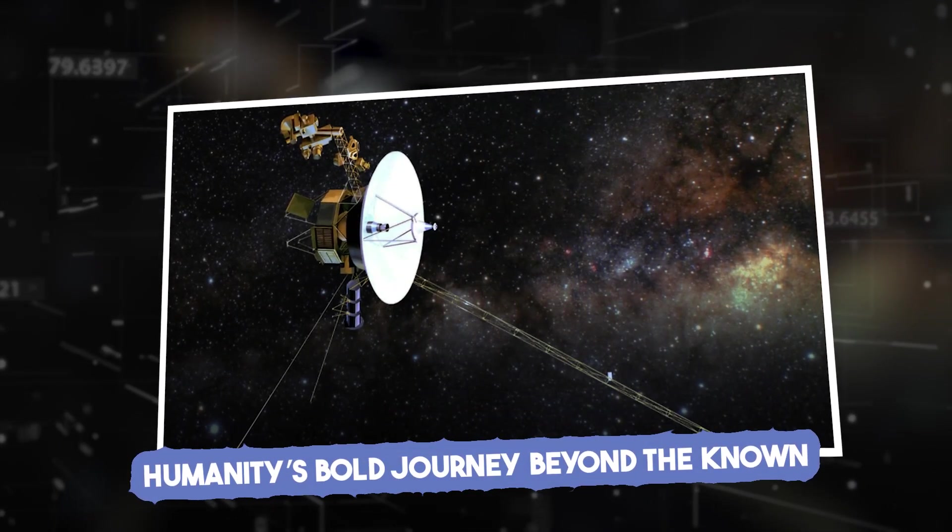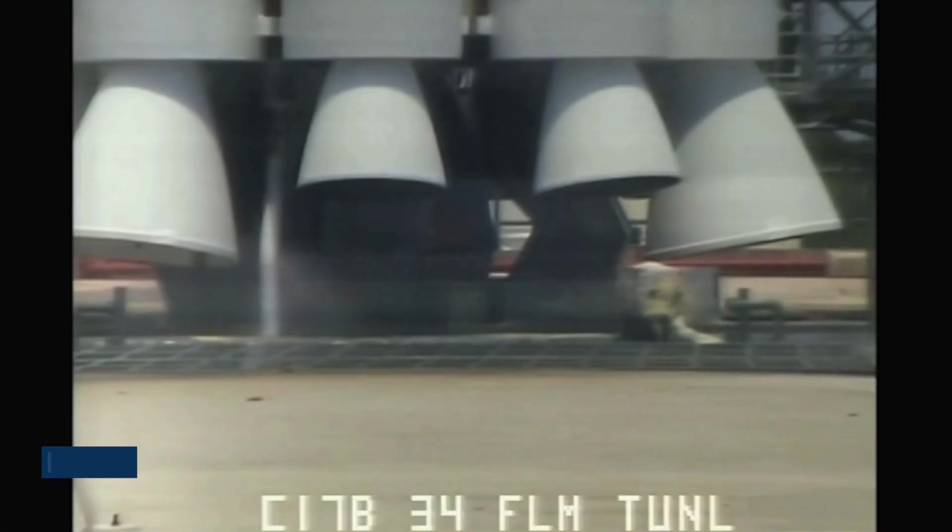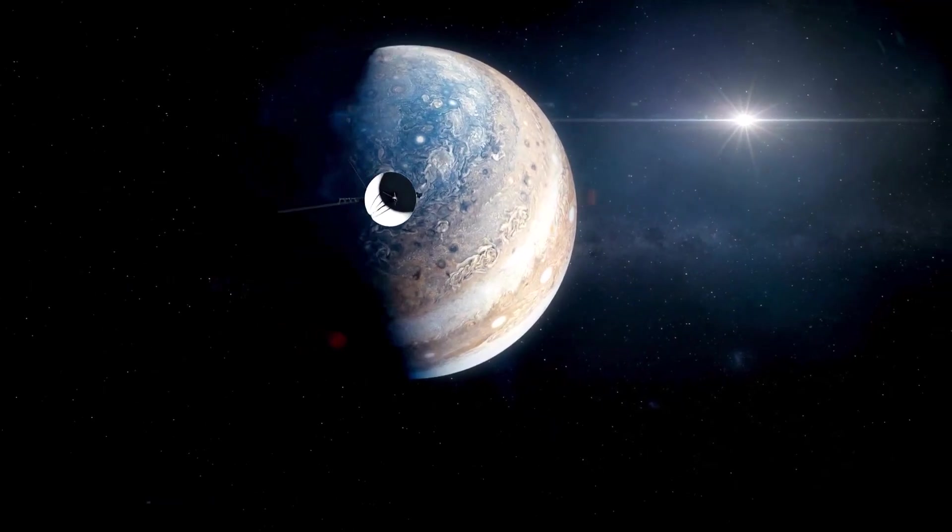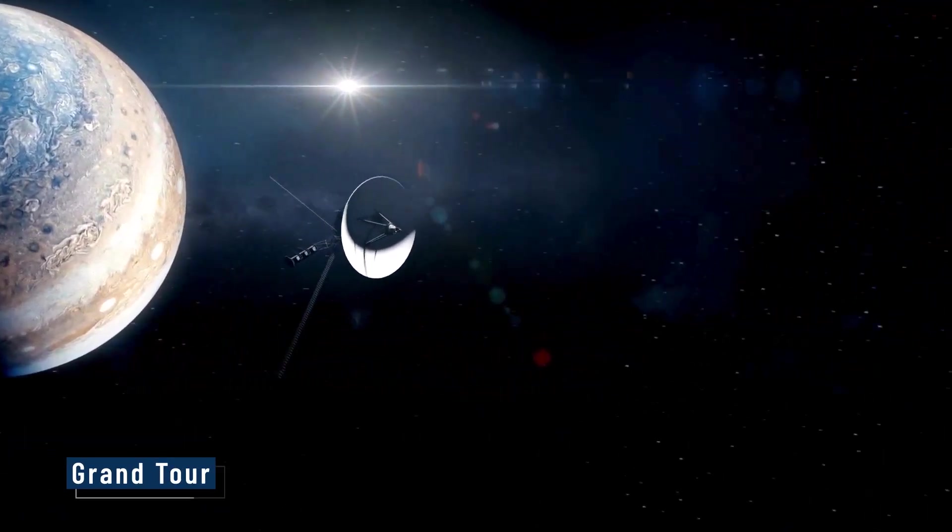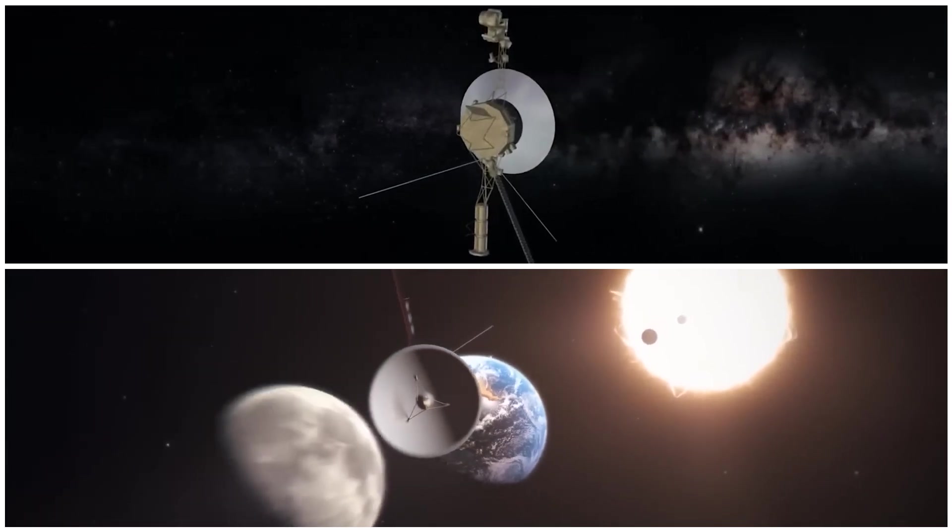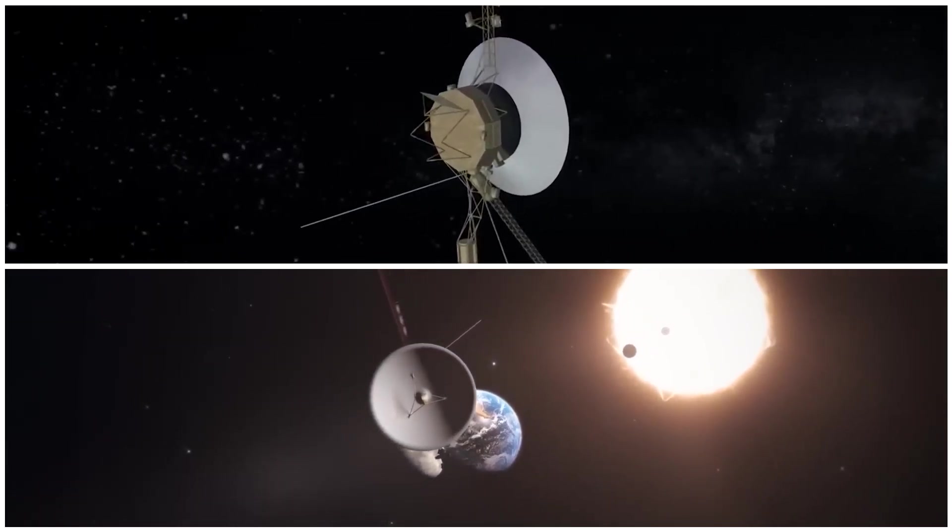Humanity's bold journey beyond the known. In 1977, Voyager 2 was launched alongside its twin, Voyager 1, during a rare planetary alignment known as the Grand Tour. This celestial event allowed the spacecraft to use gravity assist, catapulting it toward distant worlds.